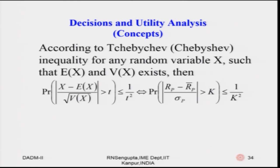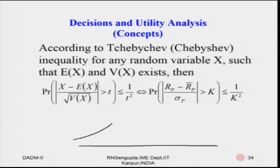Let us look at this from a diagrammatic point of view. If I am able to draw the diagram, it will be easy for me to explain and you will get the concept decently clear. I will first draw the normal distribution. I will use black for the axis. I have the expected value, which I will mark in red — so this is E(x), which can also be R̄_p or R̄_pA or R̄_pB.